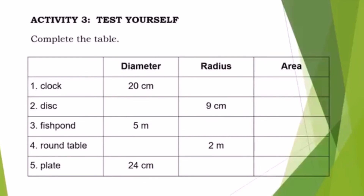Let us proceed to keep practicing. Box the correct area of each circle given the radius or diameter. While answering this activity, you can pause this video. Activity 3, test yourself. Complete the table by providing the correct diameter, radius, and area. Again, while working on this activity, you can pause this video.